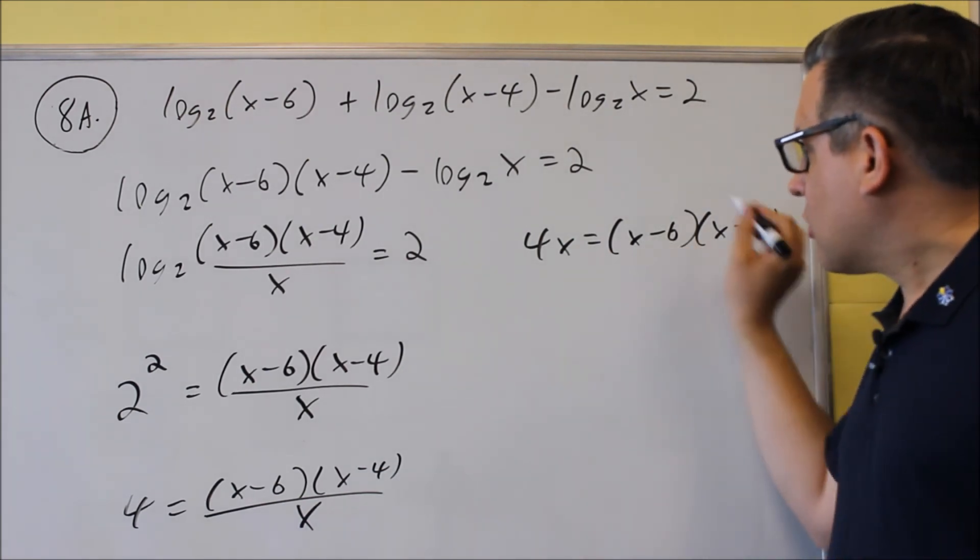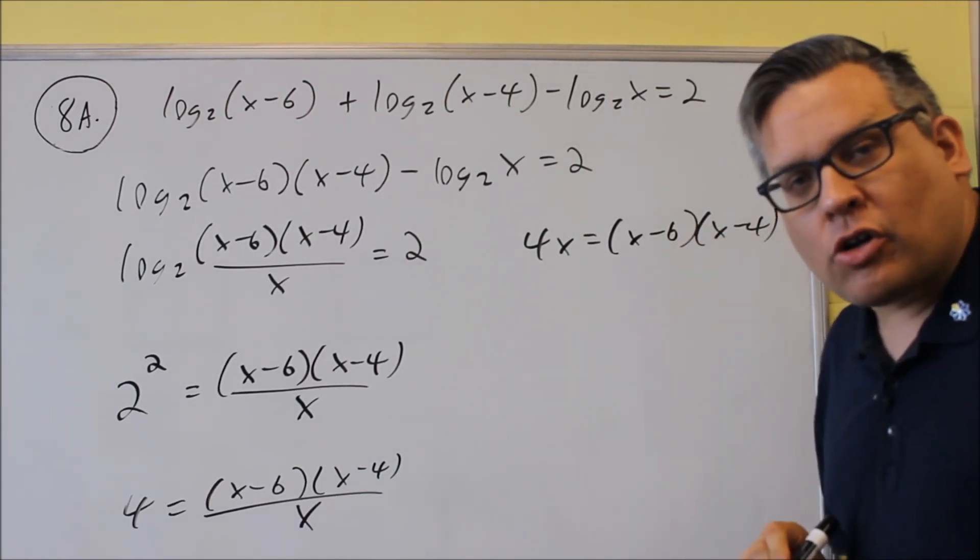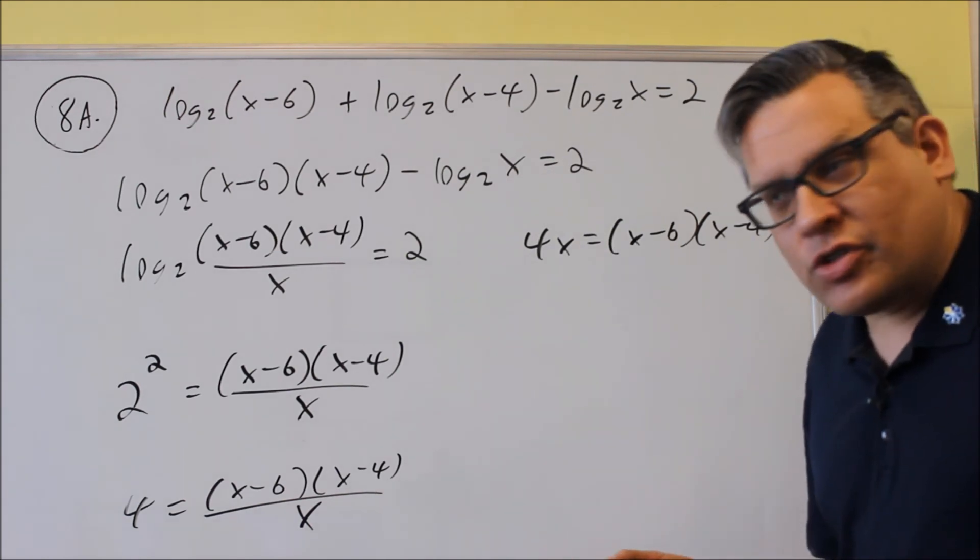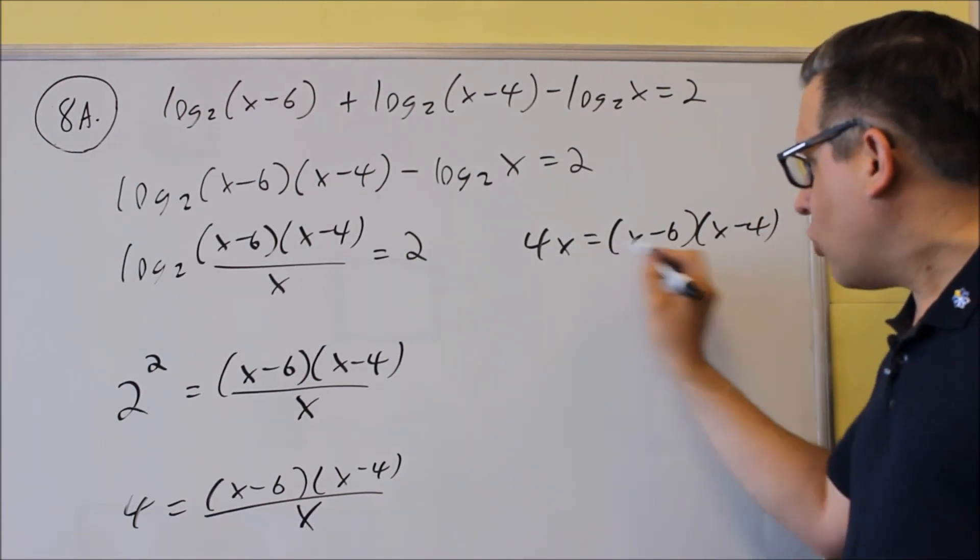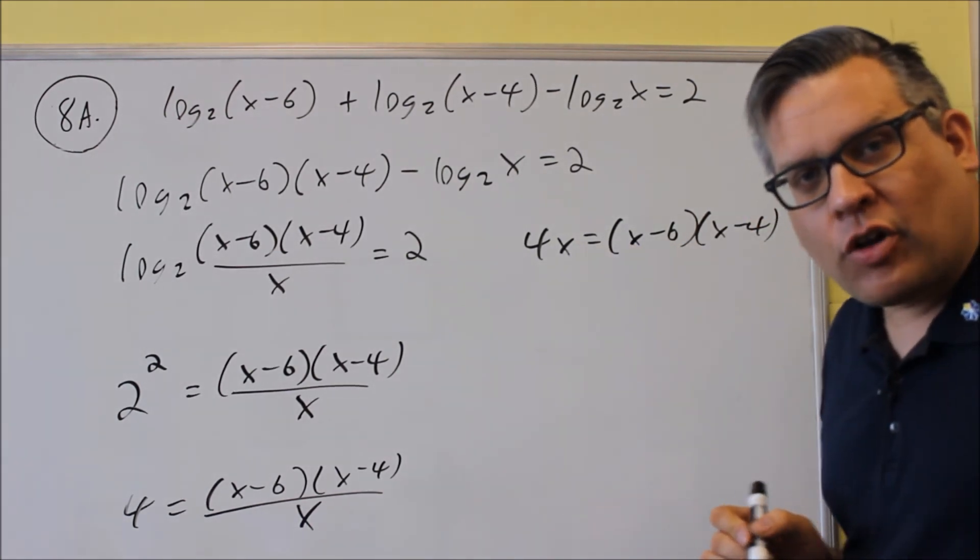Now at this point, you need to multiply this out and turn it into a quadratic equation, then we're going to set it equal to zero. So you can't just set each one equal to four x, it doesn't work that way, it only works with zero.